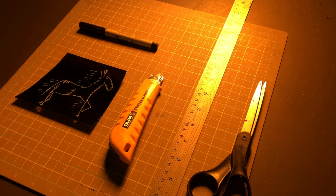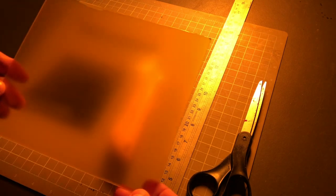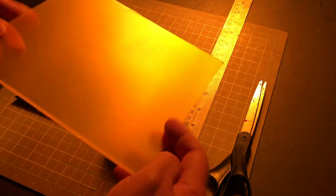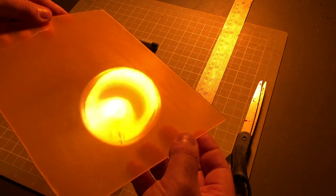So over on a work table in the darkroom, we've got a small cutting mat, knife, thin sharpie, scissors, a negative transparency, and this stuff. Photopolymer letterpress plate material.